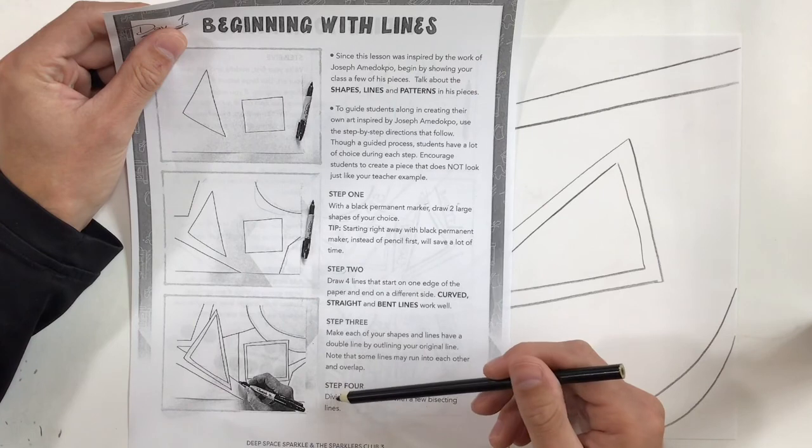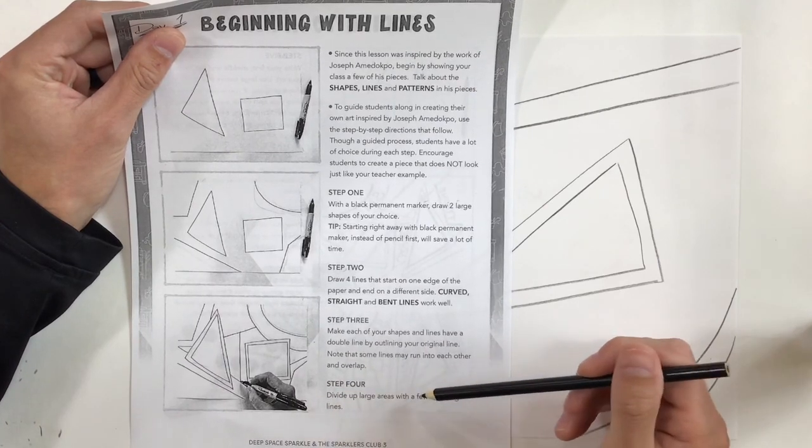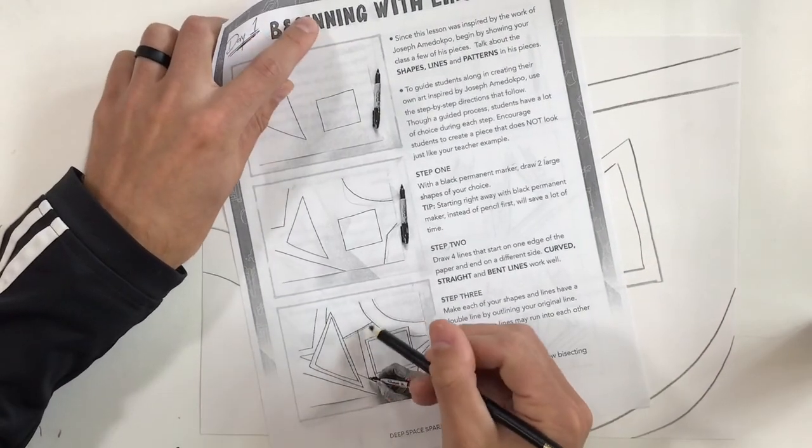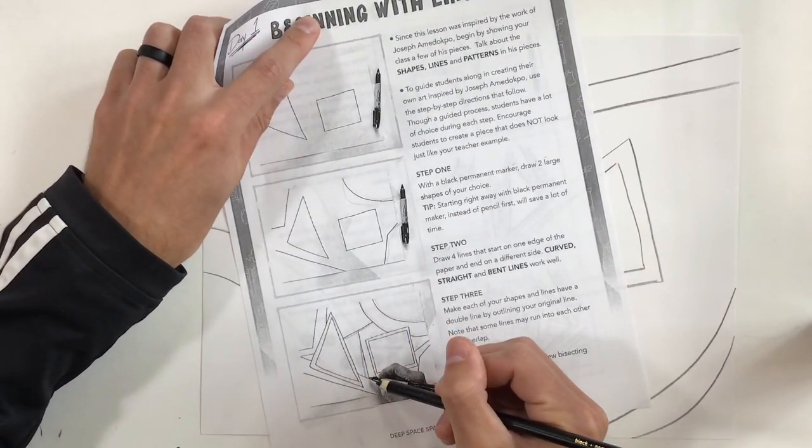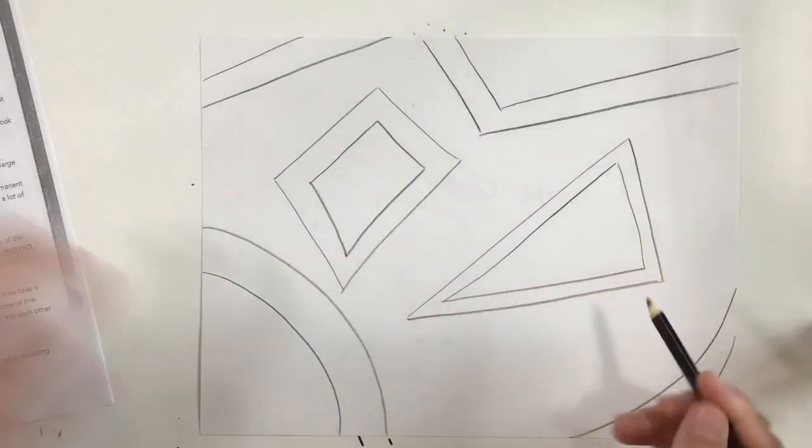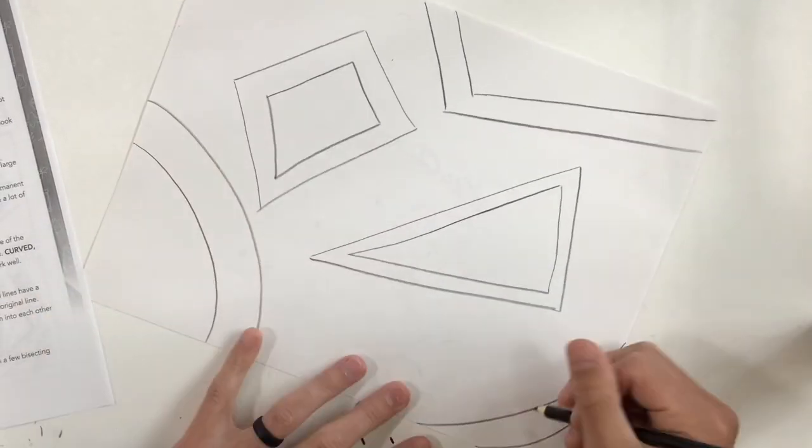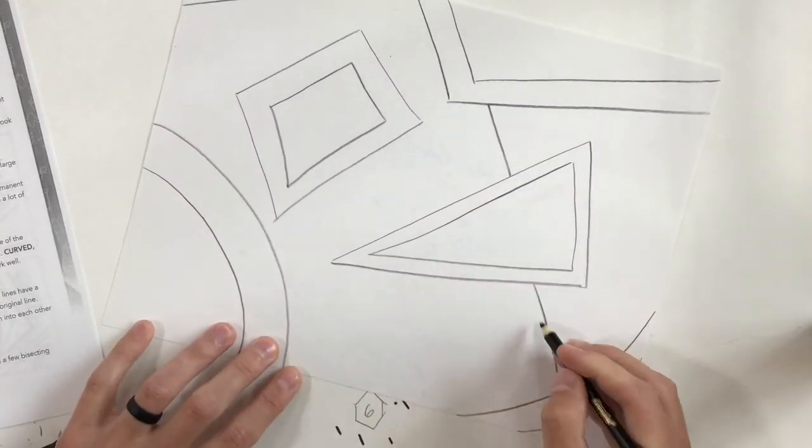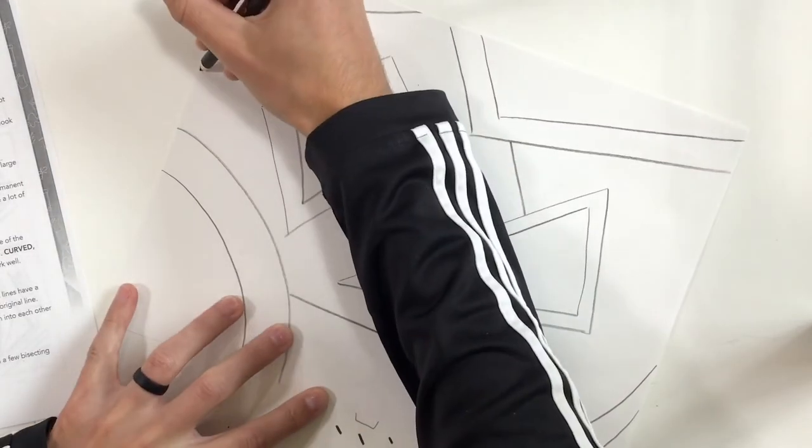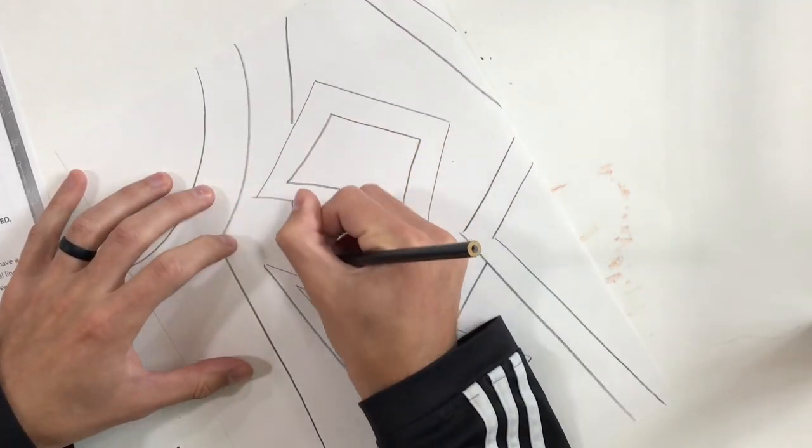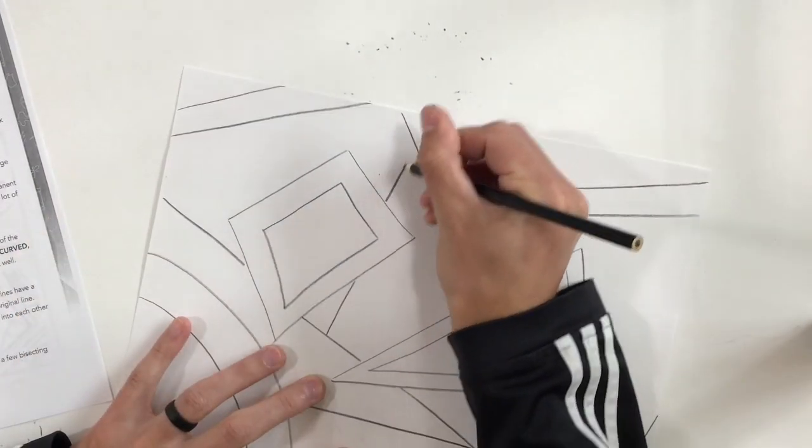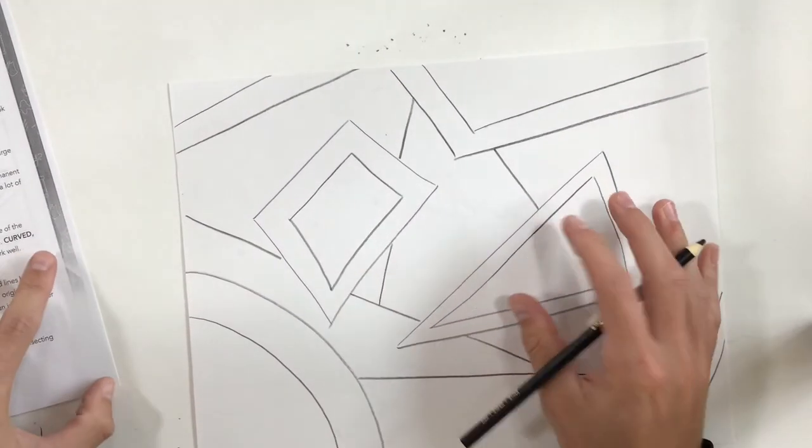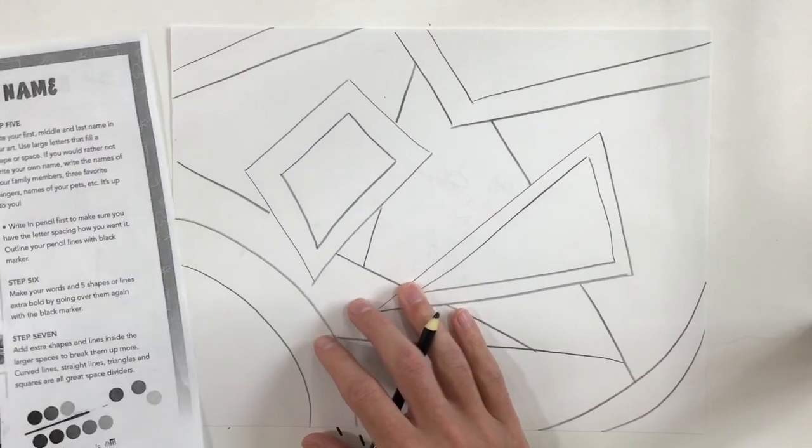Step five, or step four, divide up large areas with a few bisecting lines. So bisecting line, it's kind of these lines that you see in the background, they're just straight lines that they're using to divide up the space. So you can kind of draw those how you'd like. So I'll go like a line through here. So I got a few bisecting lines, don't want to do too many, because you have to fill all those shapes in. So don't do too many.